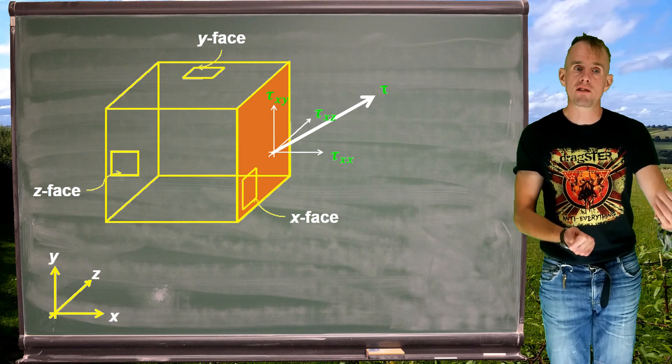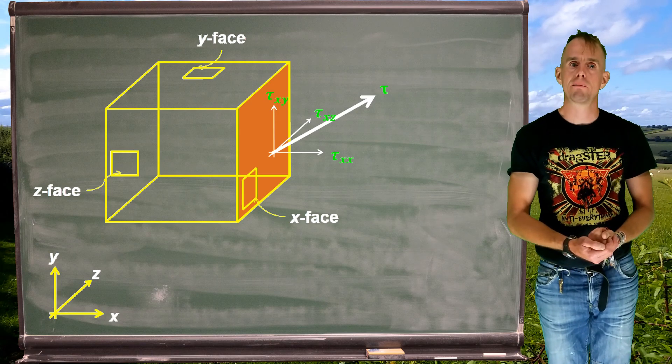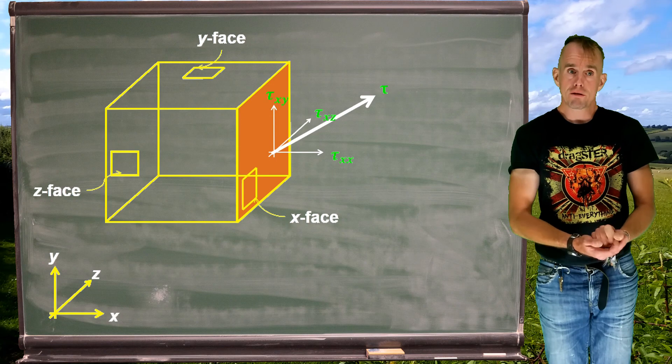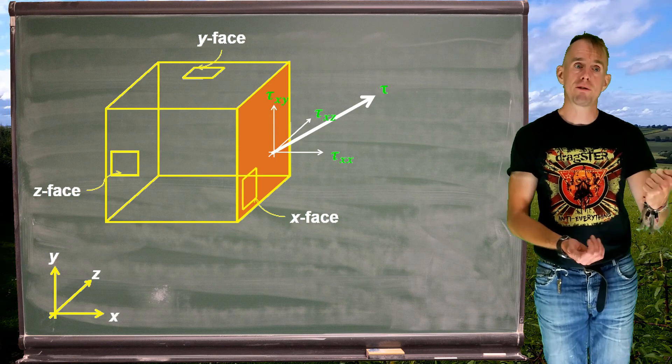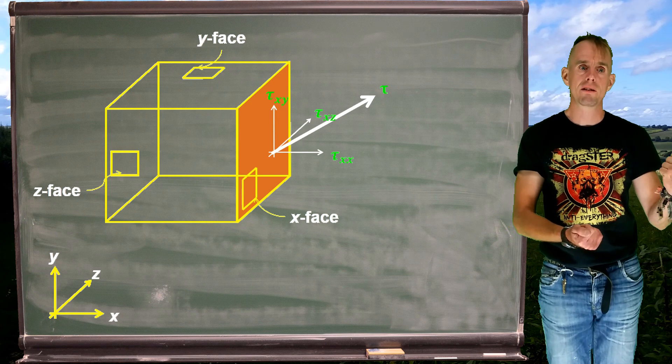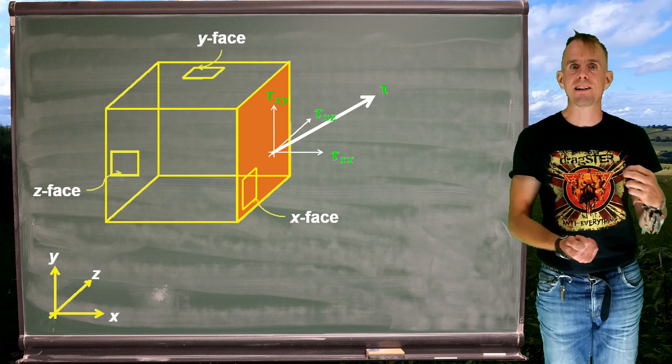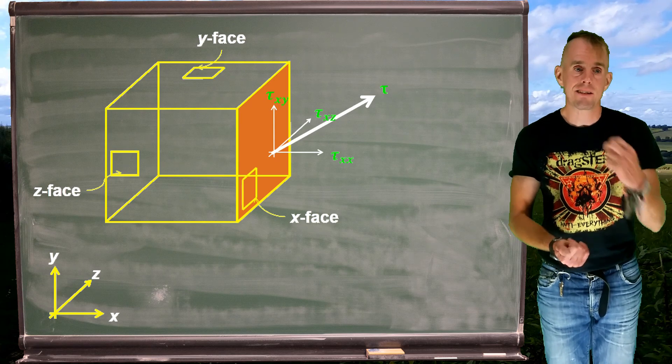The stress is designated tau, and the components into which it decomposes have two subscripts. Face first, then direction of force. So tau_xy acts on the x face in the y direction. Likewise, tau_xx acts on the x face in the x direction.